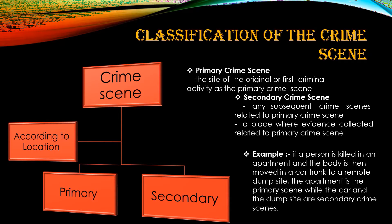For example, if the primary crime scene is where the body is found — such as an apartment — and the suspect used a car to transport the victim, then the car will be the secondary crime scene, and the apartment with the body will be the primary crime scene.